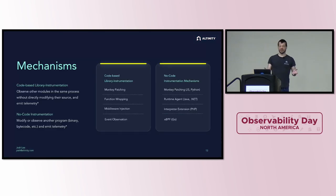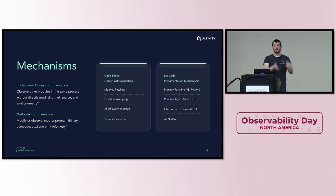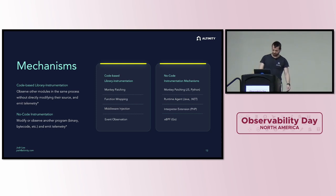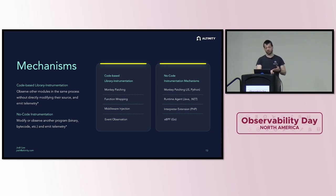Let's talk about the different mechanisms for auto-instrumentation. The no-code instrumentation mechanisms are basically injecting SDKs that depend on library instrumentation mechanisms. Library instrumentation is anything running inside the same process as another dependency — you didn't modify what the developers wrote, but you wrote code that observes what's happening. For no-code instrumentation, the goal is to get those SDKs in without modifying the original source code. The mechanisms for library instrumentation include monkey patching, function wrapping, middleware injection, and event observation.